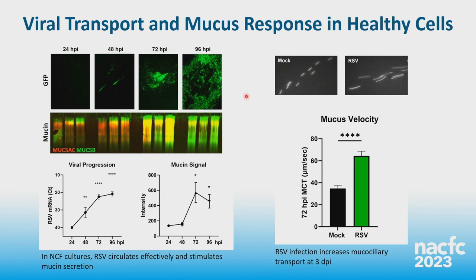To look at viral progression in vitro, we use a GFP-tagged RSV virus and observe the progression in culture. We also looked at mucus secretion using MUC5AC and MUC5B via Western blot. I want to highlight that we are in enclosed systems in vitro — viruses that move more go round and round finding the next cells to infect, which is very different from in the lungs where effective mucociliary clearance moves mucus and virus toward the glottis to be expelled. So more viral load in vitro doesn't necessarily mean the same as in vivo.